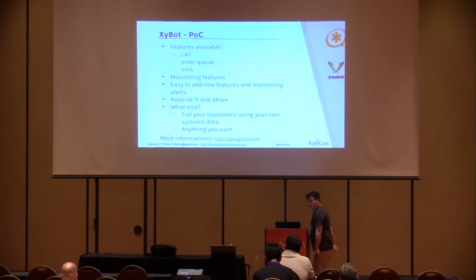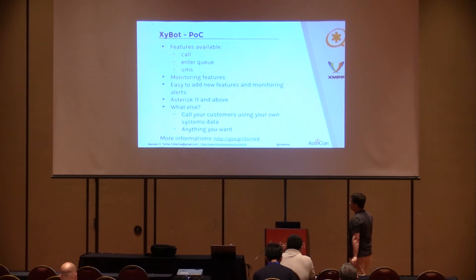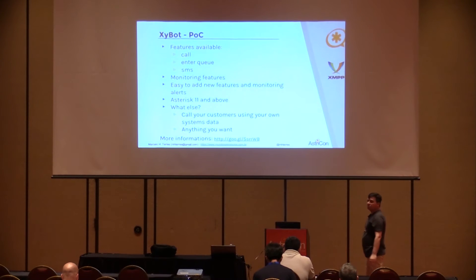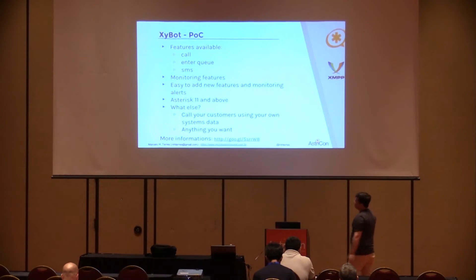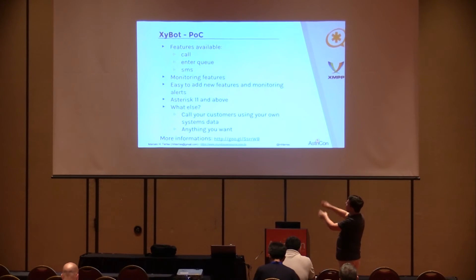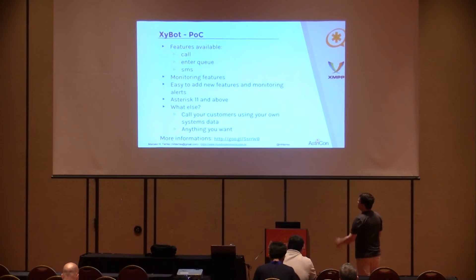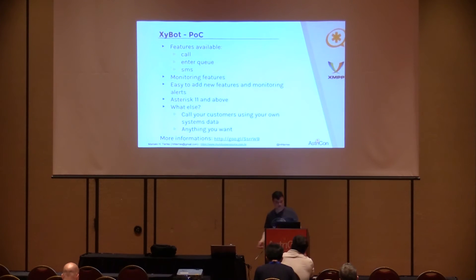This is to add new features and monitoring alerts — I'll show you that a little later. It requires Asterisk 11 and above, but you can adapt it to older versions by removing some features. You can do whatever you want with it. For example, you can call your customers using your own system data — say you have a customer code and want to call customer company three with code 22, you can write 'call 22' and the system will make the call.